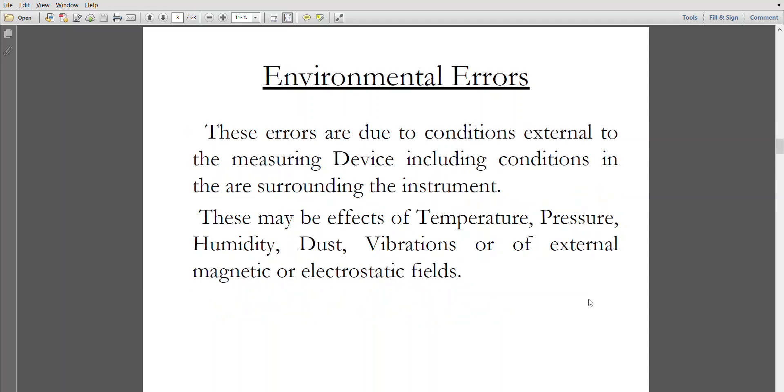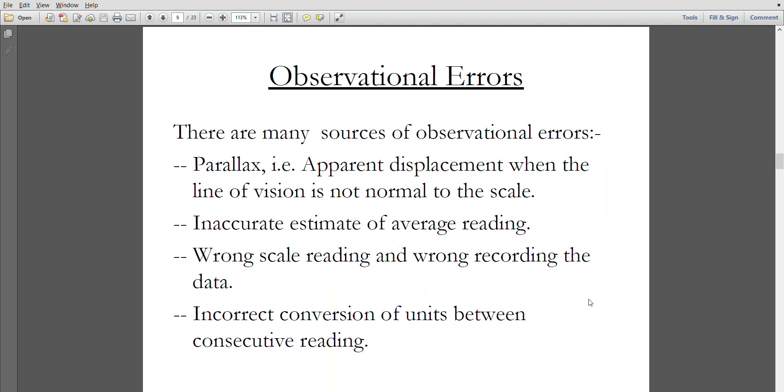Environmental errors. These errors are due to the conditions external to the measuring device, including the conditions of the surrounding instrument. These conditions may be temperature, pressure, humidity, dust, vibrations, or external magnetic or electrostatic fields.